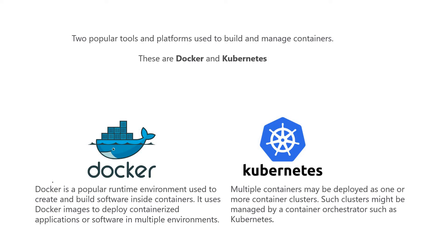Docker uses Docker images to deploy containerized applications in multiple environments - it could be a Linux machine or a Windows operating system. But suppose you have multiple containers in a production environment. If you are familiar with microservices architecture, each microservice runs inside a container, and that could be a very complex scenario where we need some technique to manage all these containers inside a cluster. Kubernetes can do this kind of orchestration.